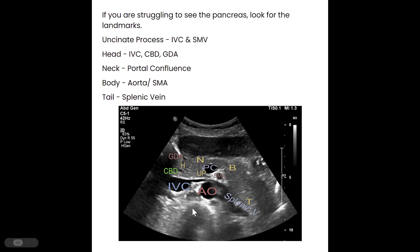The uncinate process is sandwiched between the IVC and the SMV. The head is going to have the GDA and the common bile duct in it and is anterior to the IVC. The neck of the pancreas is just anterior to the portal confluence. The body is going to be left lateral to the superior mesenteric artery and the aorta. And the tail is going to be wrapped by the splenic vein on the posterior side. All pancreatic tissue is surrounded by these major landmarks that help us identify where the pancreas is.